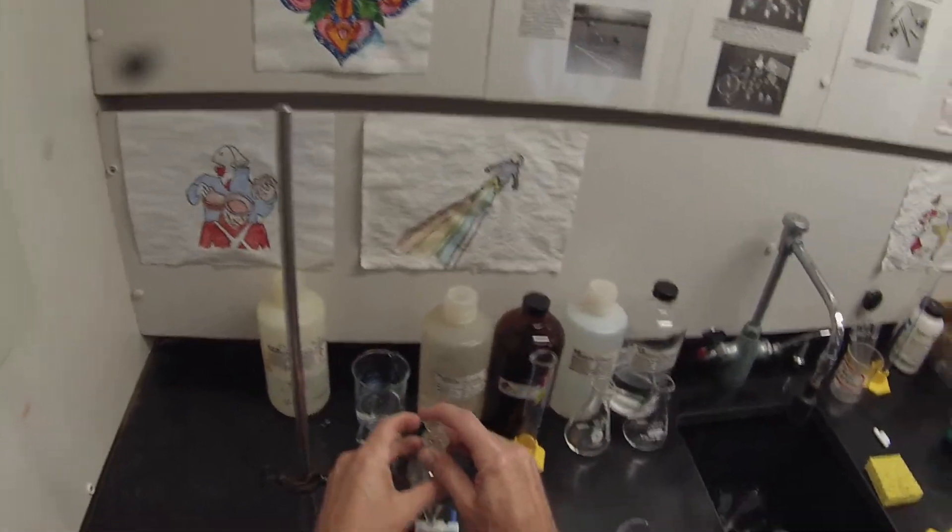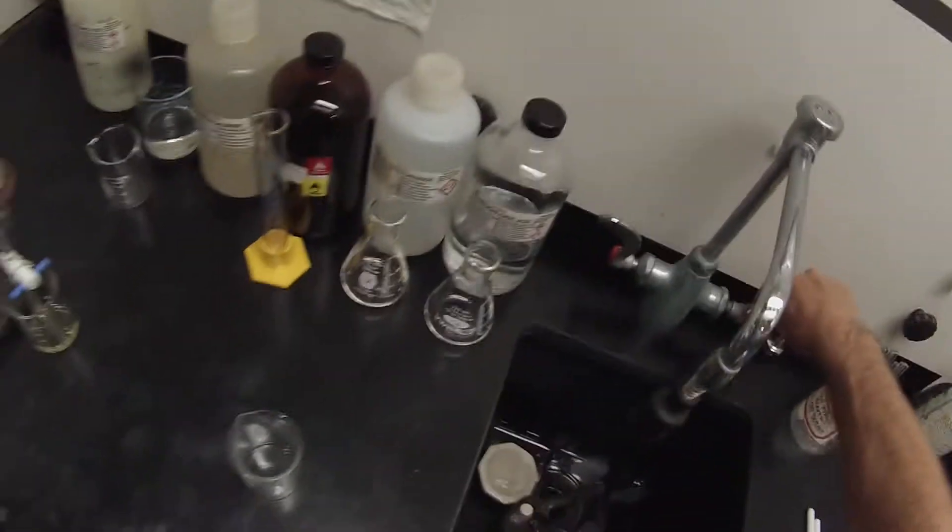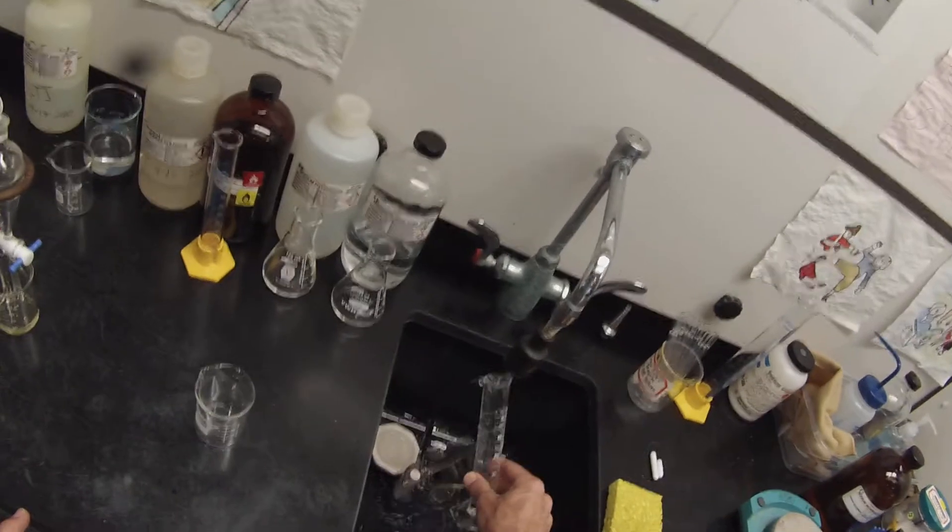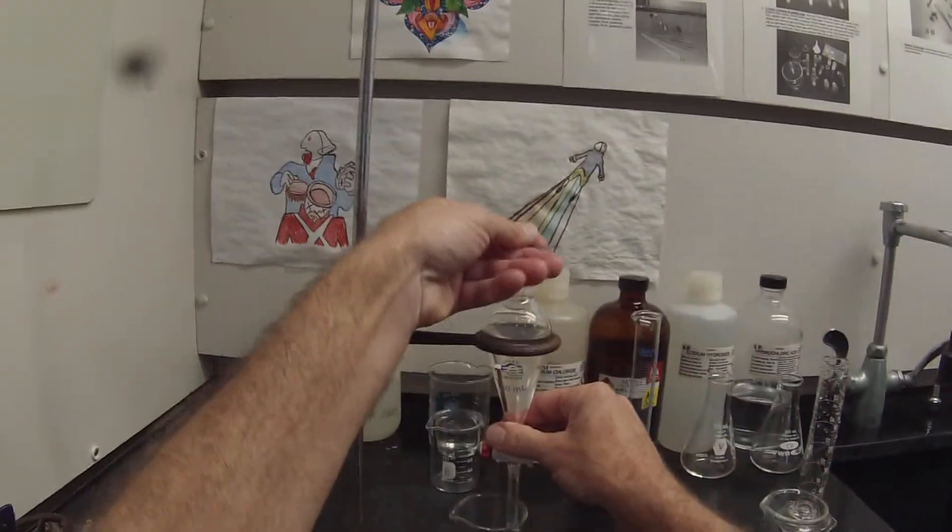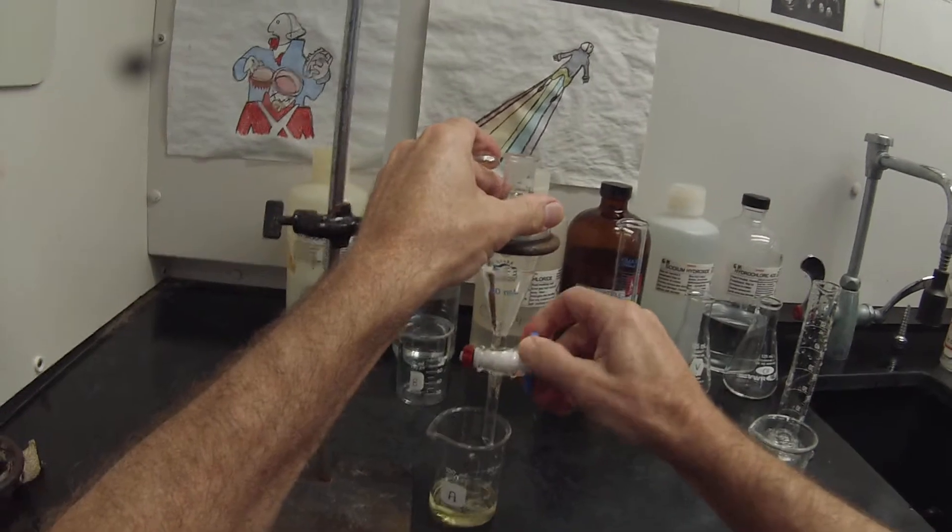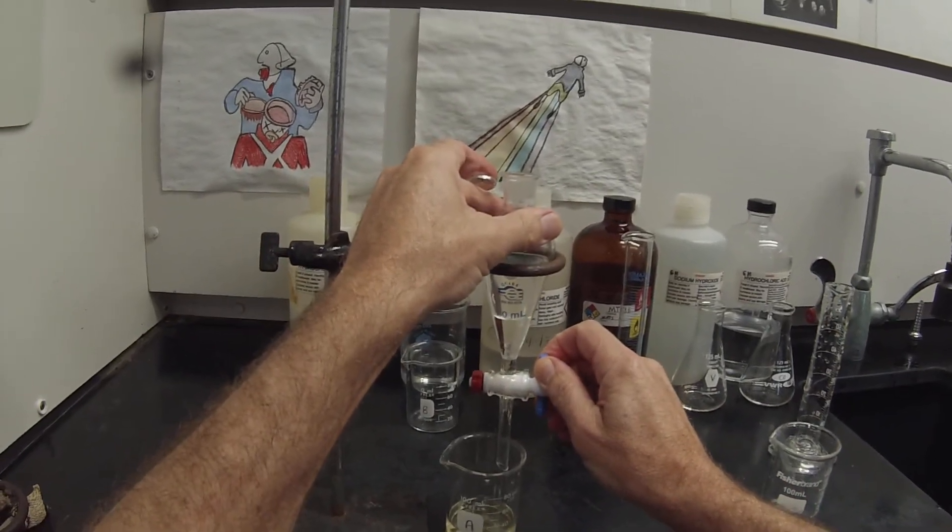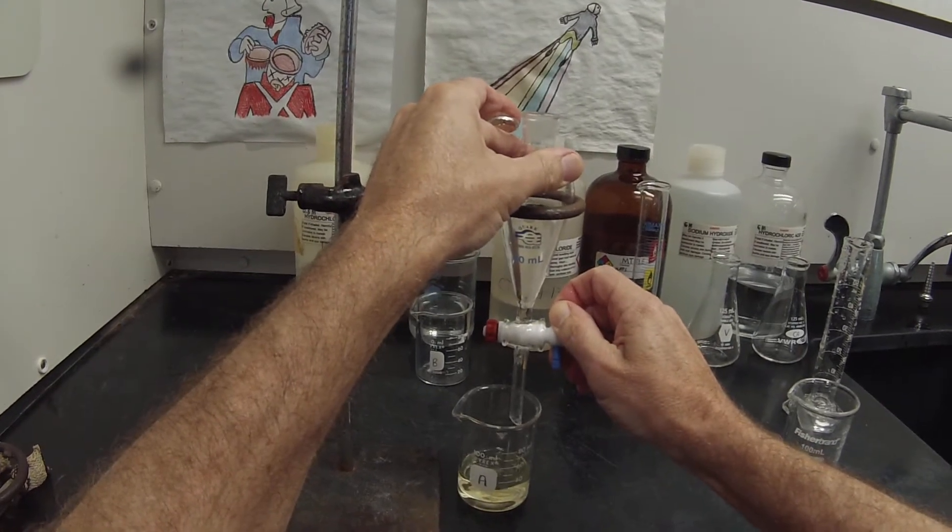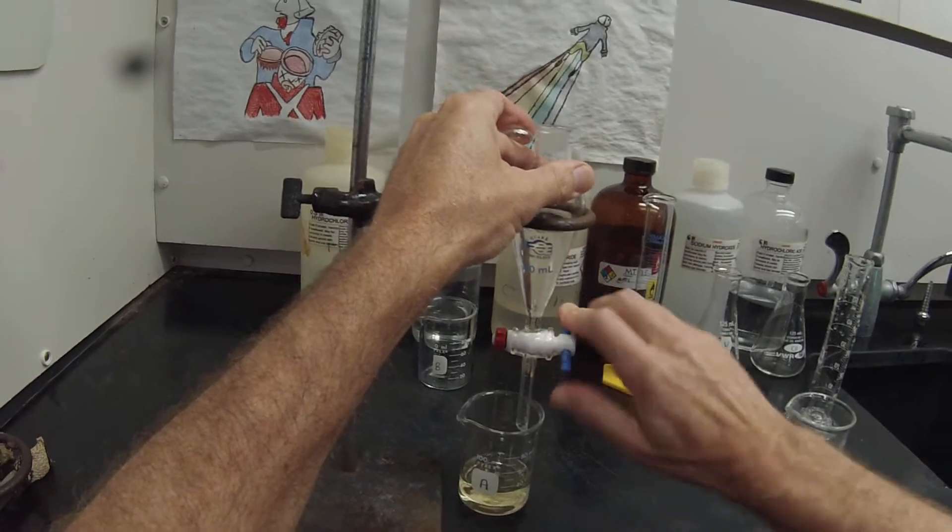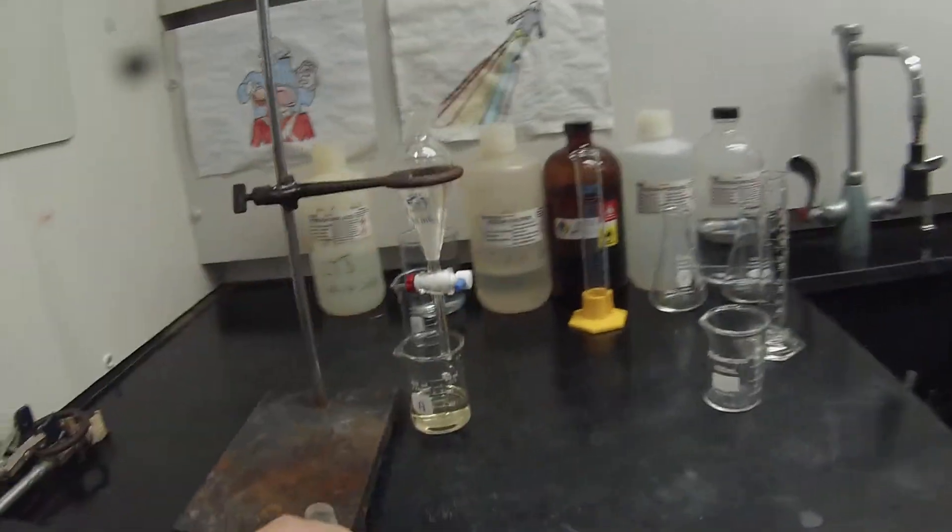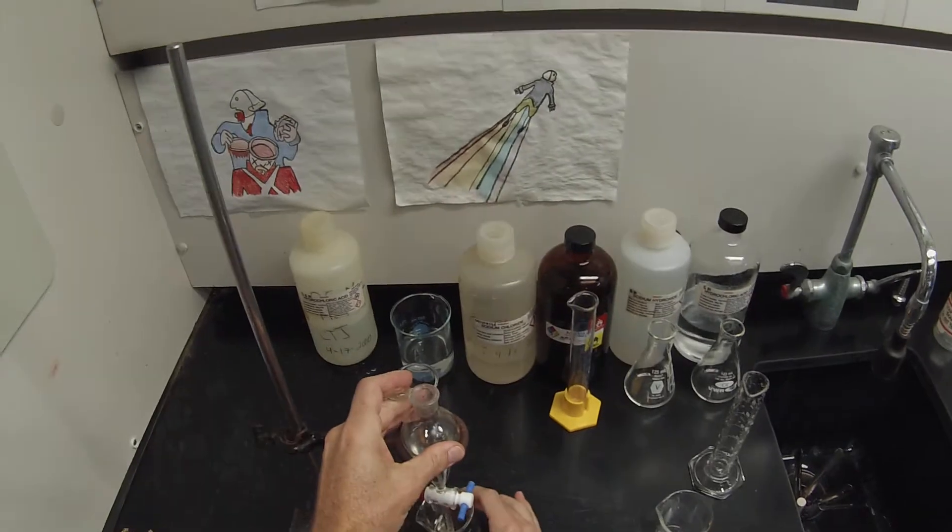Methyl tert-butyl ether is a nice extraction solvent, a nice alternative to ether because of its greater safety since it doesn't form explosive peroxides. It's very inexpensive because it has for years been used as a gasoline additive, so you can get large quantities of MTBE cheap. It's got a nice low density, so it floats on top just the way diethyl ether does. There's our acid layer, only about 30 milliliters of it this time.